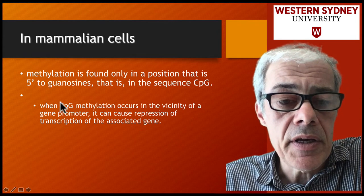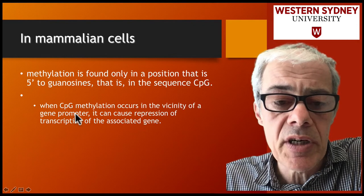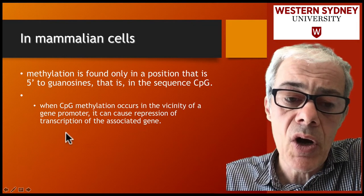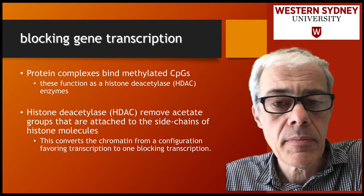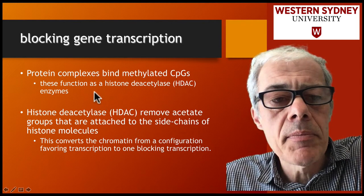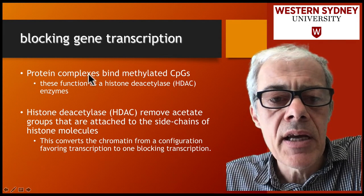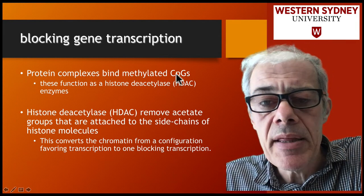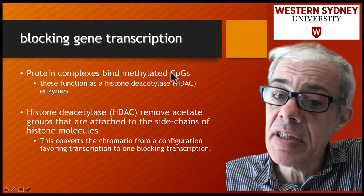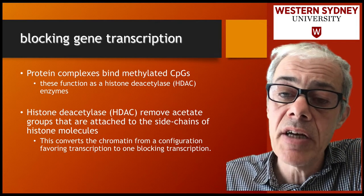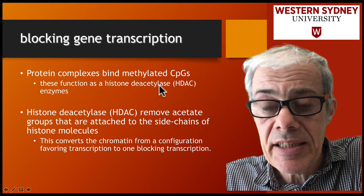When CpG islands become methylated within a gene promoter, they cause repression of transcription of that gene. How does methylation block transcription? There is a protein complex that recognizes methylated CpGs — it does not recognize unmethylated CpGs. This protein activity is called a histone deacetylase.